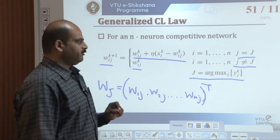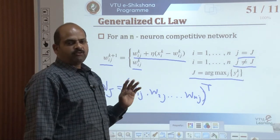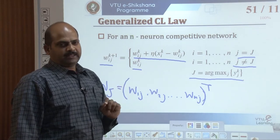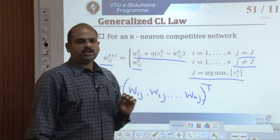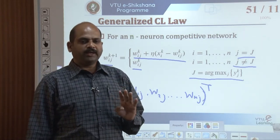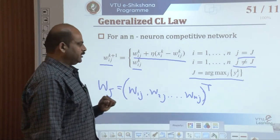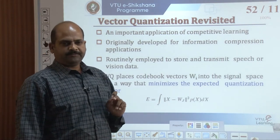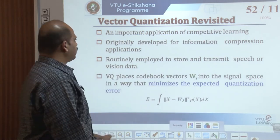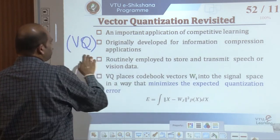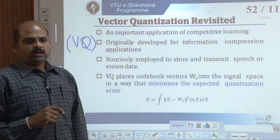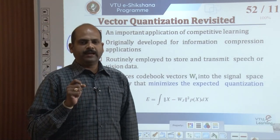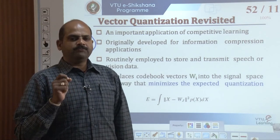With this idea, we can study four important neural network models that have their foundation in competitive learning. The first model is vector quantization, revisited. Vector quantization, simply called VQ, is an important application of competitive learning, originally developed for information compression applications.